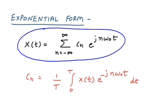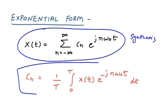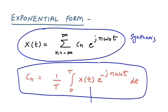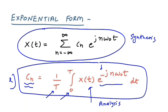This first formula is known as the synthesis equation. The second formula is known as the analysis equation because you are using x(t) to find the Fourier coefficient cₙ. The formula is cₙ = (1/T) ∫₀ᵀ x(t) · e^(−jnω₀t) dt, where T is the fundamental time period. An important distinction: in the synthesis equation the power of the exponential is positive, while in the analysis equation the power is negative.